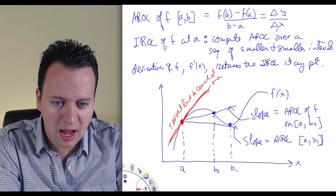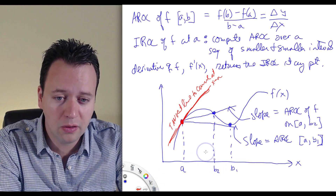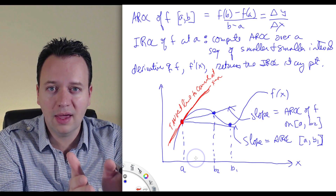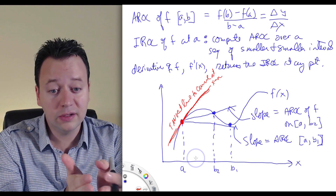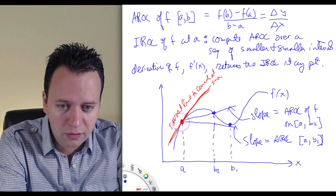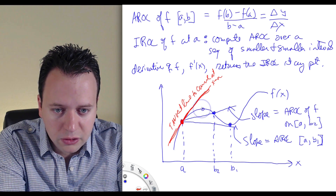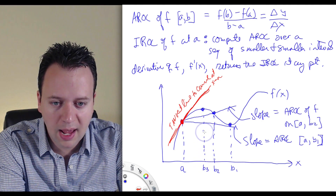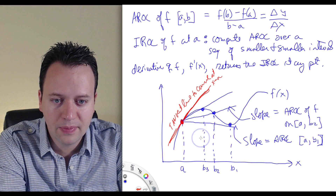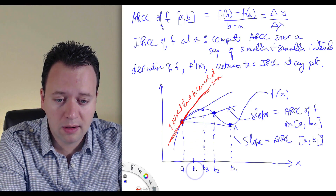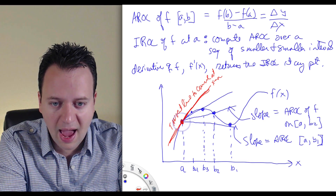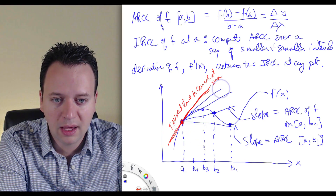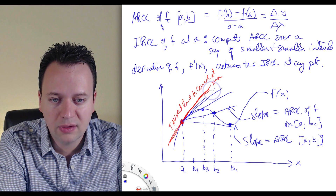Going back to the story about average rate of change and instantaneous rate of change: to find the instantaneous rate of change, we keep computing the average rate of change over smaller and smaller intervals. We can choose a point b3 even closer to a, and the average rate of change between a and b3 gives the slope of that line. Doing it again with b4, the average rate of change between a and b4 is the slope of that line. As we keep decreasing the size of the interval, these secant lines get closer and closer to the tangent line to the curve.